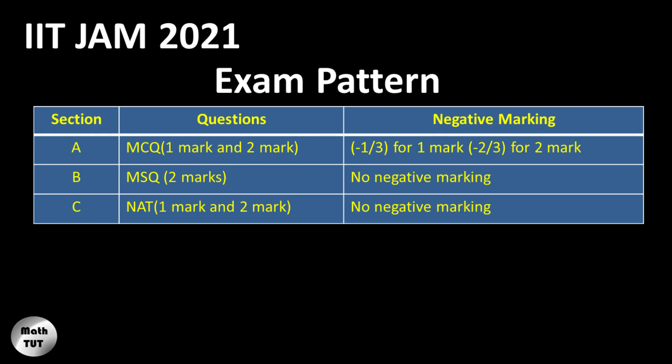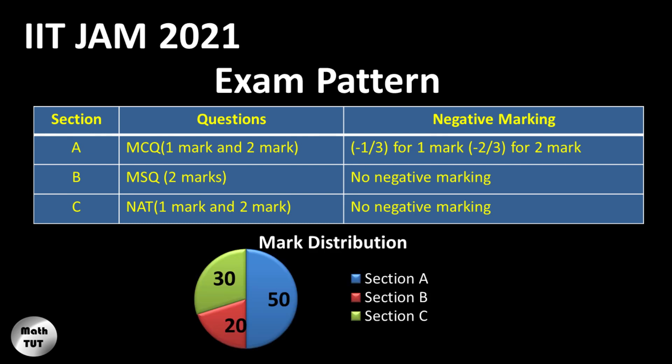Regarding negative marking: in Section A, for each one-mark question answered wrongly there is a deduction of minus one-third, and for two-mark questions answered wrongly there is a deduction of minus two-thirds. Interestingly, Section B and Section C do not have any negative markings. Section A contains 50 marks, Section B contains 20, and Section C contains 30 marks.